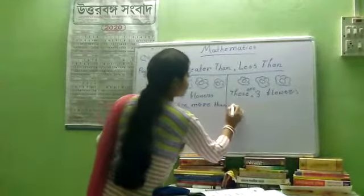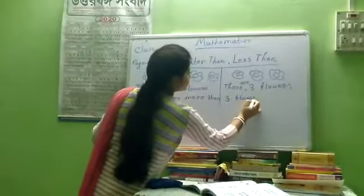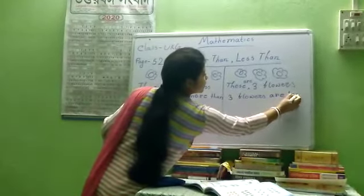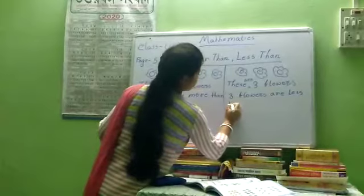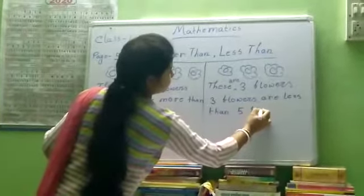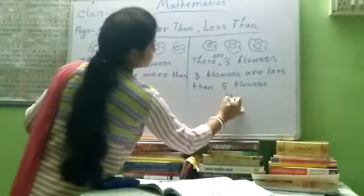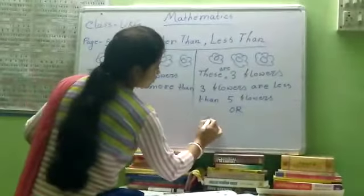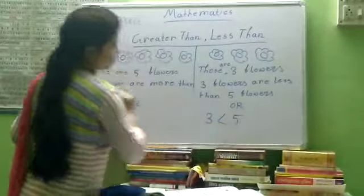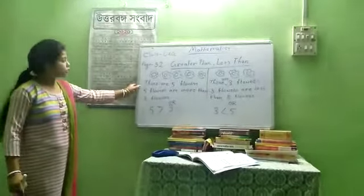Next, three flowers are less than five flowers. Or three is less than five. You follow this carefully.